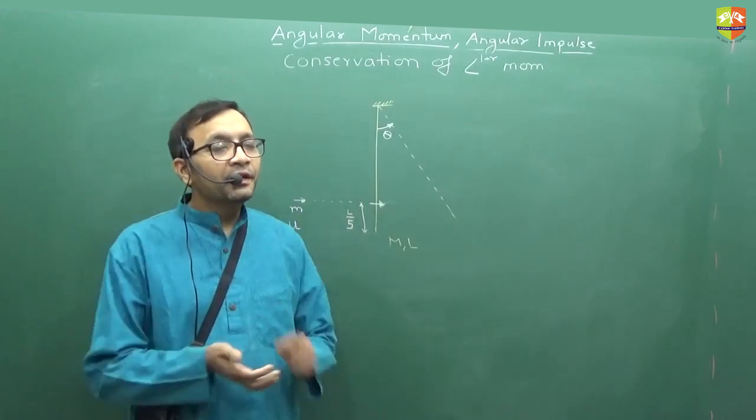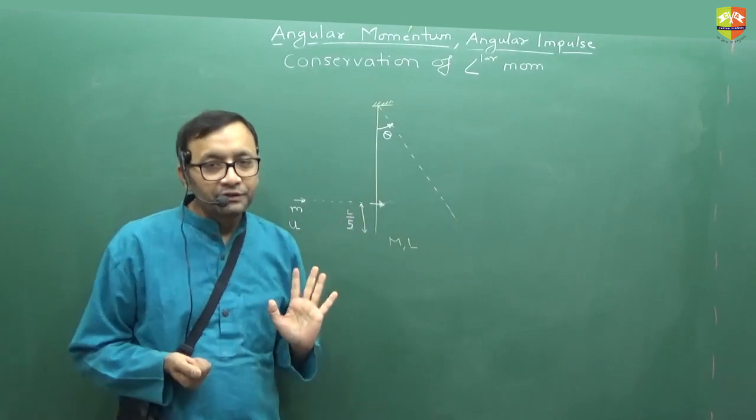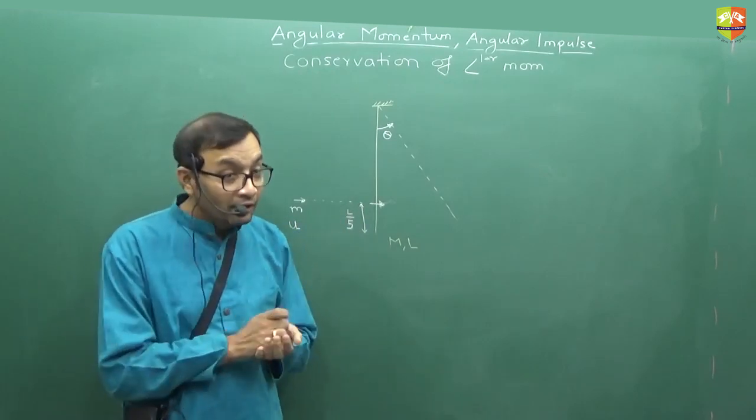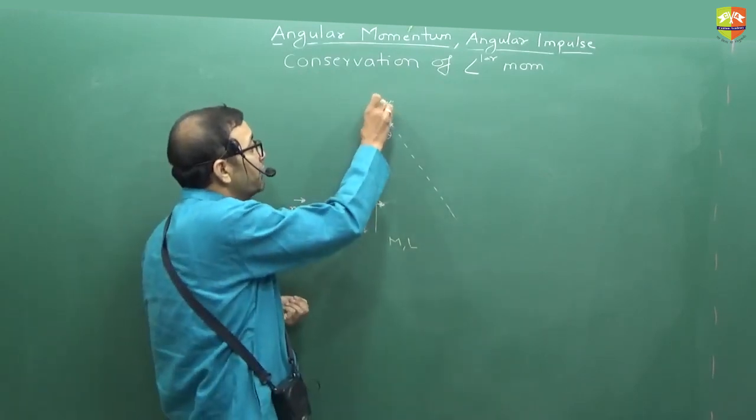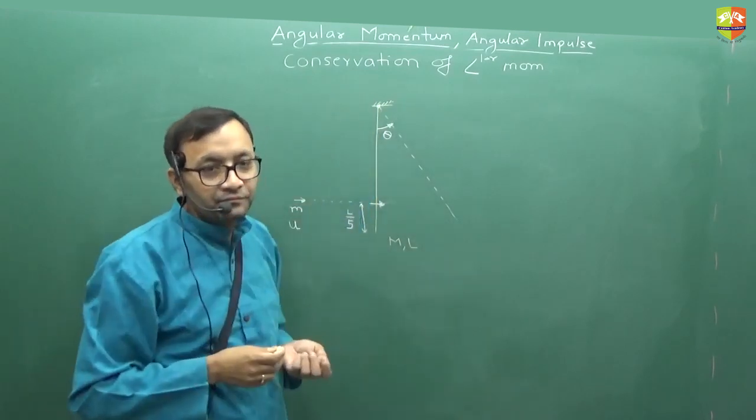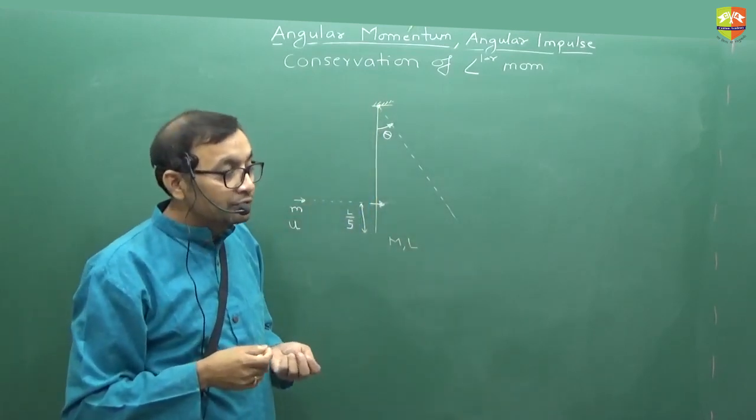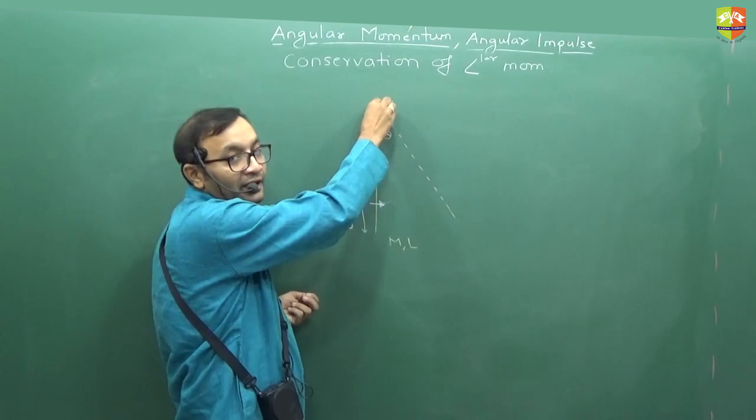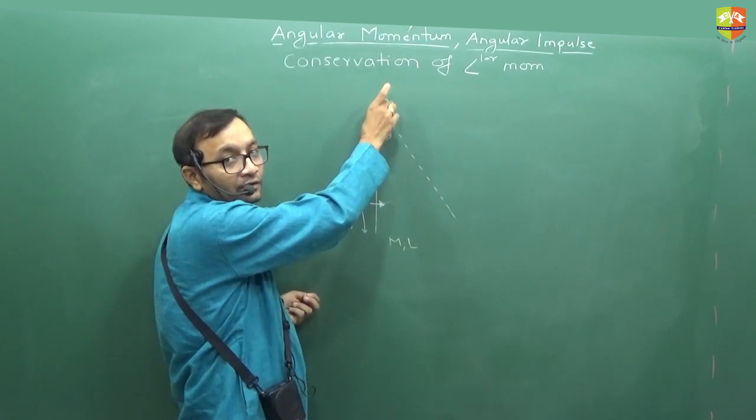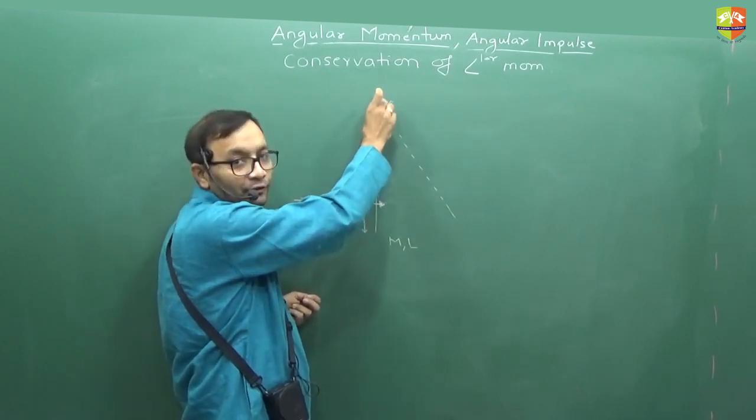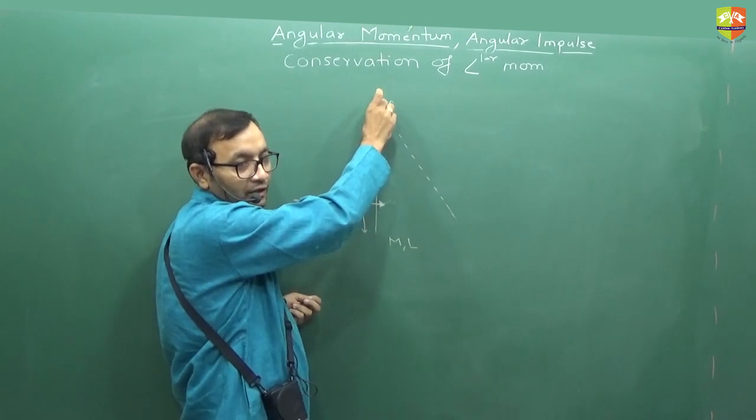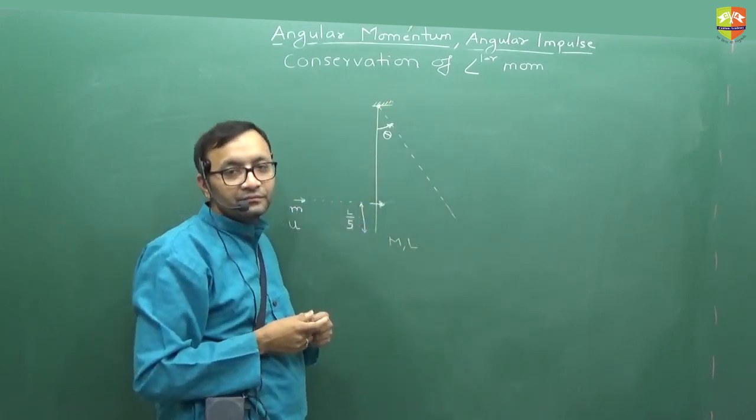Can I use conservation of linear momentum just before and after collision? I cannot use because there is a force generated at the hinge. What I can use? I can use conservation of linear momentum or not? No, because there is an axis force from this. What I can use then?